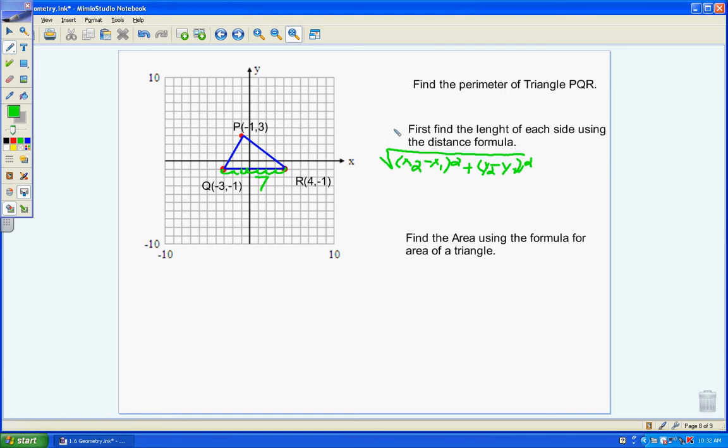So if we're going to find the length of segment PR, remember you can organize your information in a little chart to make sure that you get the values in the right spot. So I'm going to use point P first, so that's (-1, 3), and then point R is (4, -1). So I plug in my values...